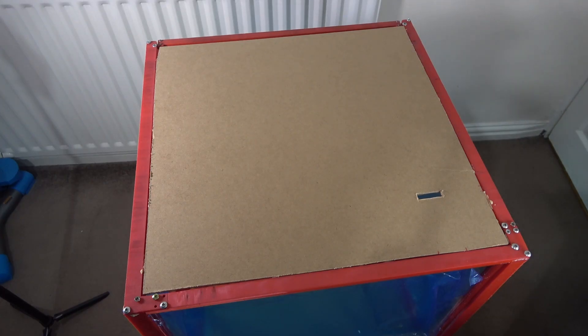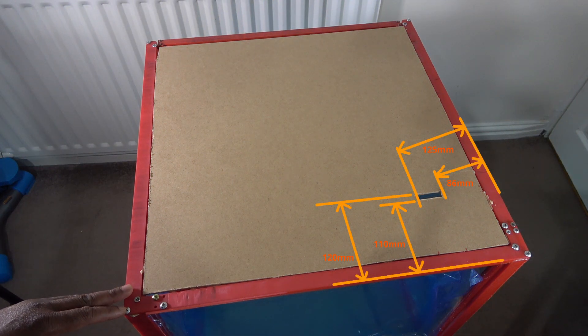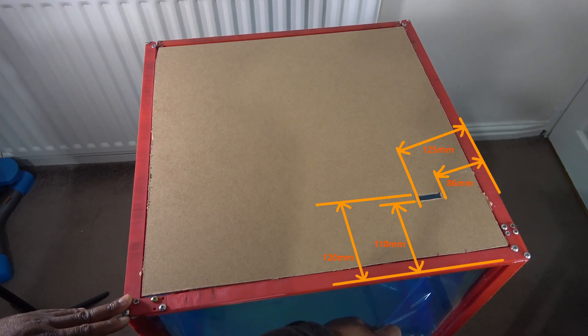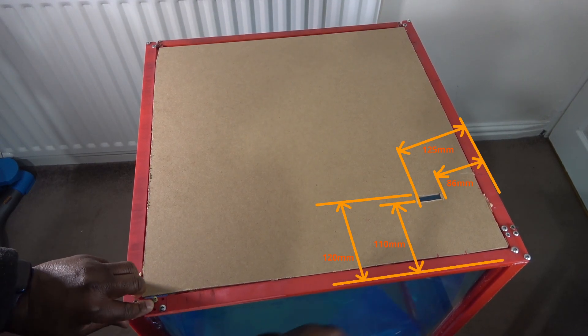I used MDF for the roof, or shall I say the top. This slot for the spool holder was measured manually after the assembly, but here are the approximate measurements.